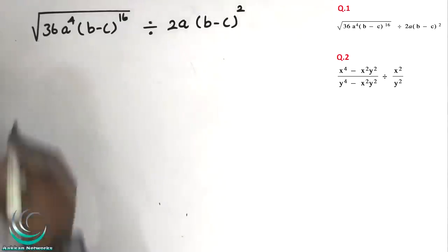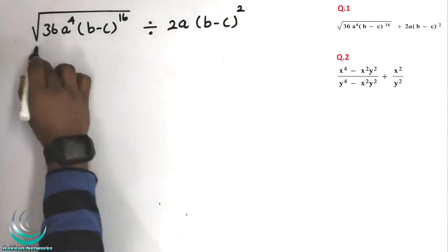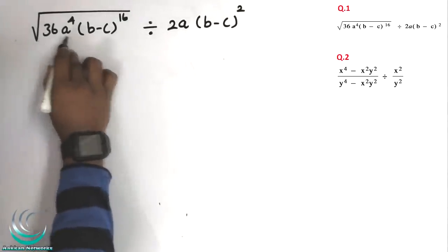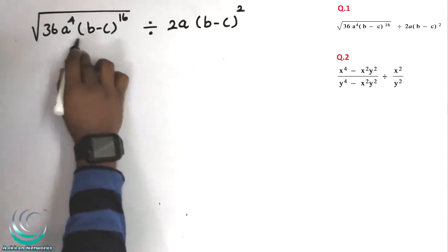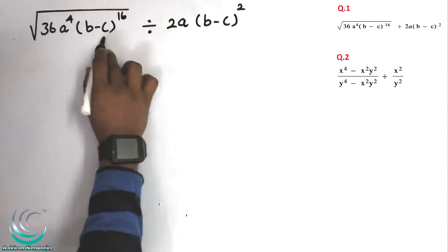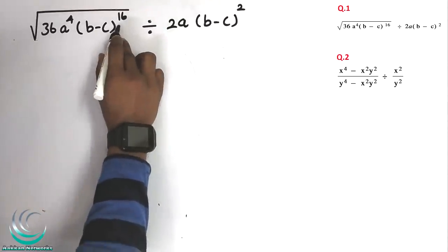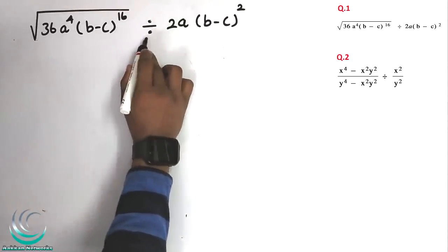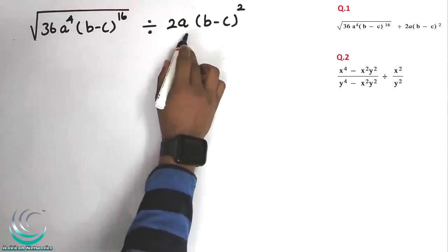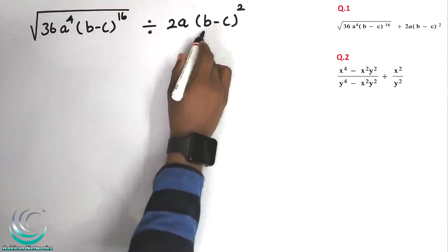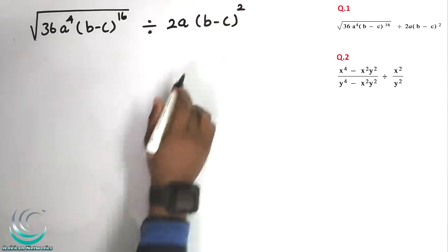The first question is: square root of 36a⁴ into (b-c)¹⁶, divided by 2a into (b-c)².